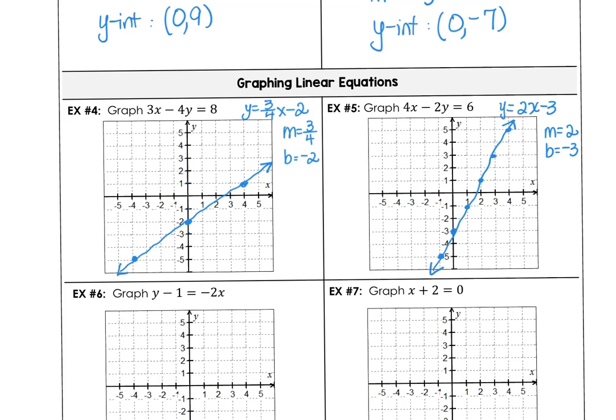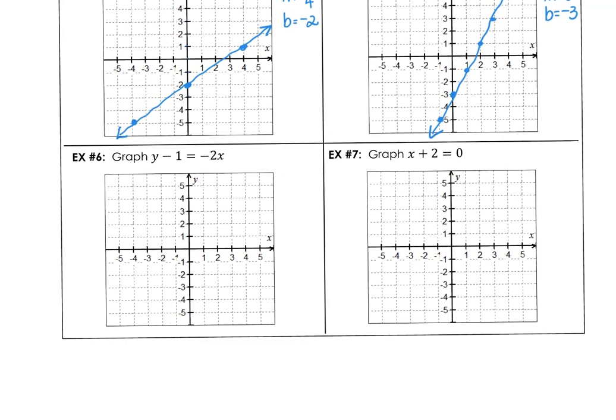For example 6, isolating y, we're going to end up with y equals negative 2x plus 1. So y equals negative 2x plus 1 with a slope of negative 2 and a b value of positive 1. Again, we have our graph here, and 2 down, 1 right, 2 down, 1 right. Or go back to the y-intercept and move 2 up, 1 left, 2 up, 1 left. And we have a line that falls from left to right. Our slope is negative.